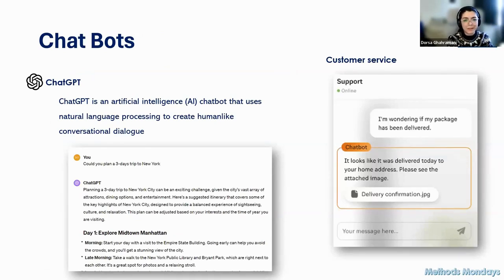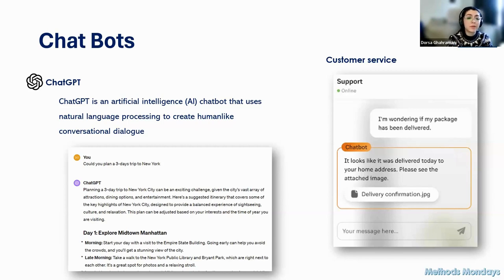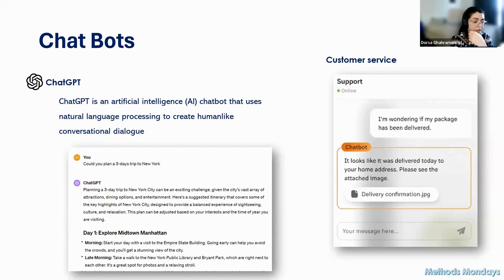Google Translate is an example of language translation, one of the core NLP applications — many of us use it every day when traveling abroad. NLP can also predict and suggest text, which is how email and messaging apps suggest sentences. ChatGPT is one of the most popular NLP applications today — it's a chatbot that bridges the gap between human and computer, making interaction much easier than before. Customer service chatbots are another example.